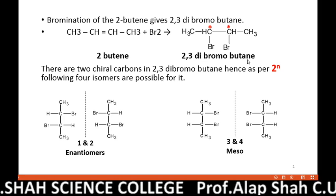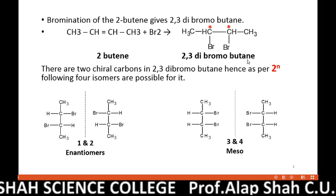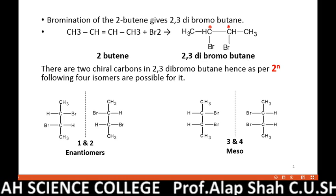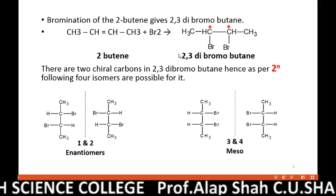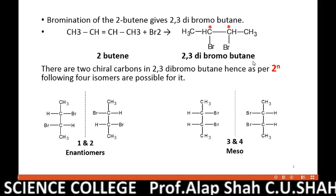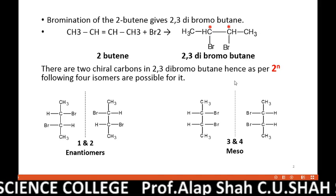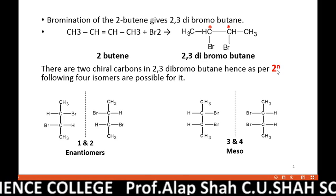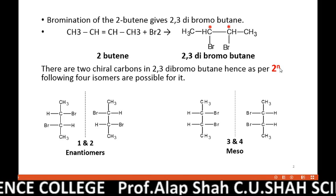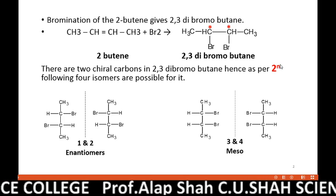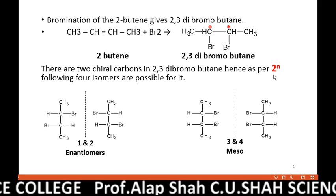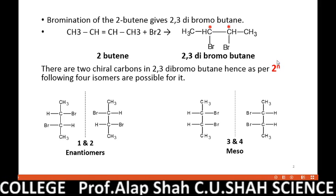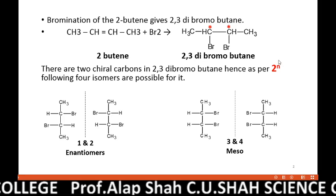Let me remind you why that is so. We know that any compound with n number of chiral centers will have a total of 2 raised to n number of stereoisomers possible.